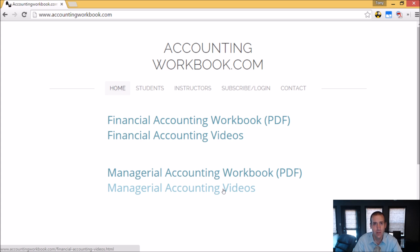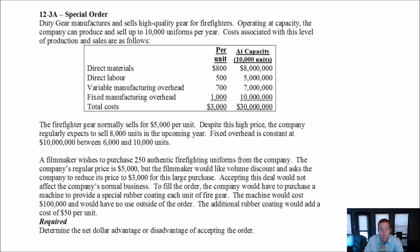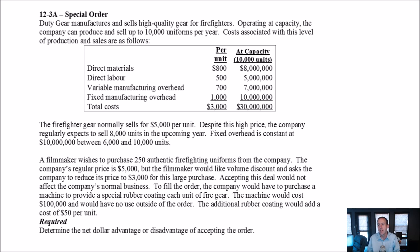Let's get started with the problem. Let's examine problem 12.3a, a special order problem. When I think of a special order problem, I think of a special customer who wants in — they want a special deal. They either want to buy a product we don't sell and want us to alter it, or they're buying so much volume they want a really good deal. They're saying, your normal customer buys one unit at a time, I want to buy 100 units — what kind of deal can you give such a big purchaser? And that's what we're looking at here with Duty Gear.